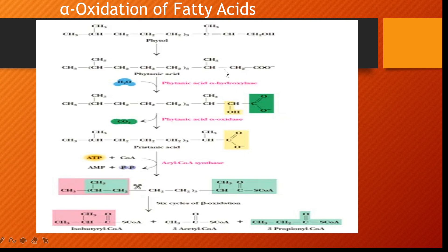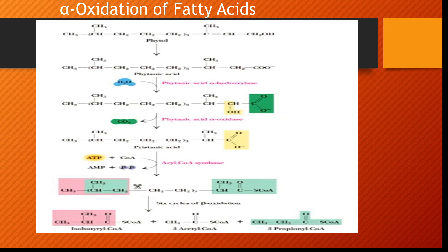We are going to oxidize this alpha carbon and this CO2 will be cleaved. This phytanic acid hydroxylase will convert phytanic acid into pristanic acid. After the oxidation with the help of the enzyme called phytanic acid oxidase, this enzyme will convert the phytanic acid into pristanic acid.